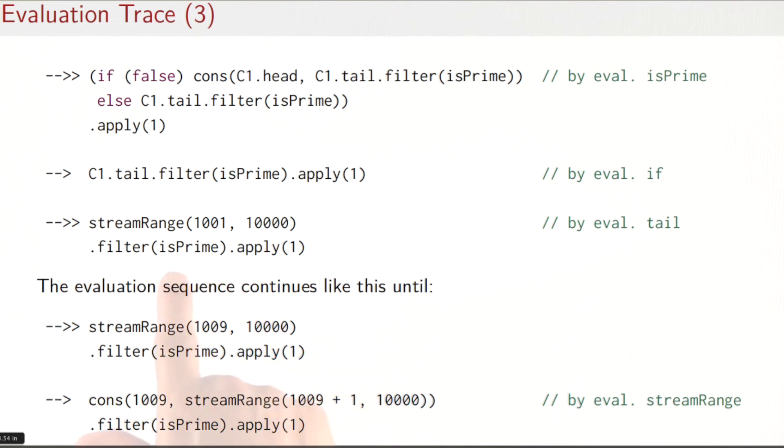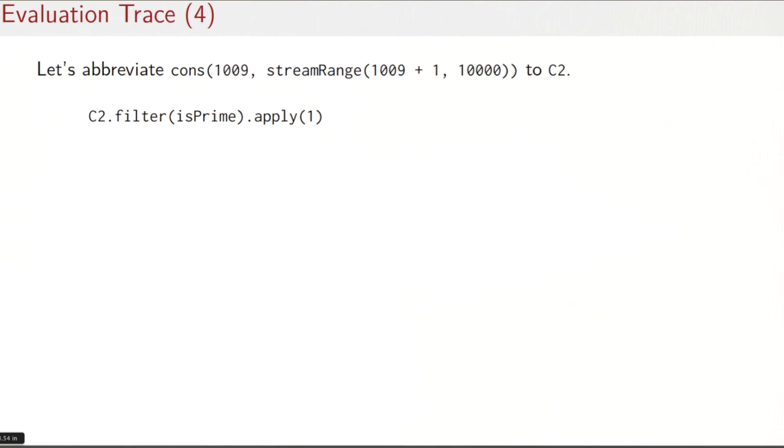So this expression would expand by a sequence of reduction steps to finally streamRange(1009, 10000).filter(isPrime).apply(1). I evaluate streamRange again; here's the expression. And I want to abbreviate that expression to C2, so I'm left with C2.filter(isPrime).apply(1). I evaluate the filter function on C2, and that gives me in a sequence of expressions cons(1009, ...) because 1009 is a prime number, so it would be included in the result of filter.